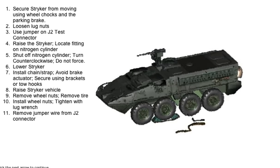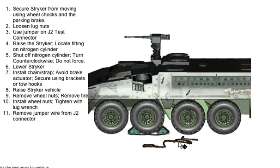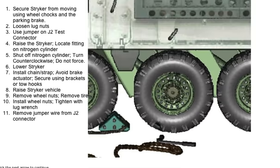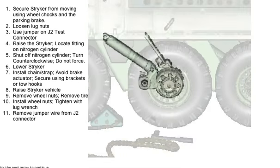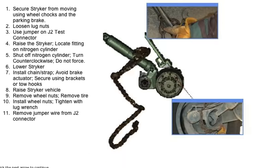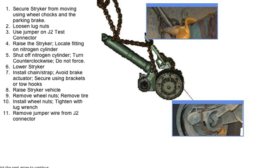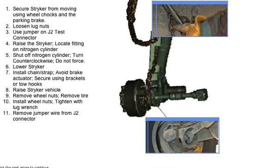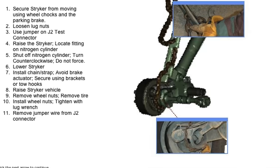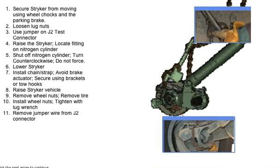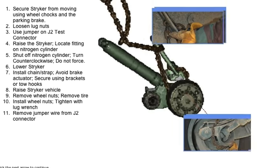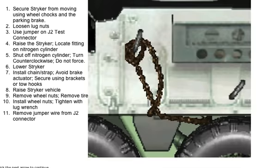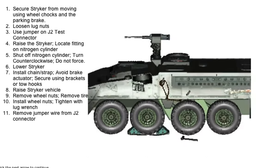Click on the Stryker again. Loop the chain or strap around the axle and hub, making sure that you clear the brake actuator canister. For rear quadrant axles, secure the ends in the brackets provided. For front quadrants, you will have to use tow hooks or other supports. Tie excess chain or strap where it will not interfere with operation.